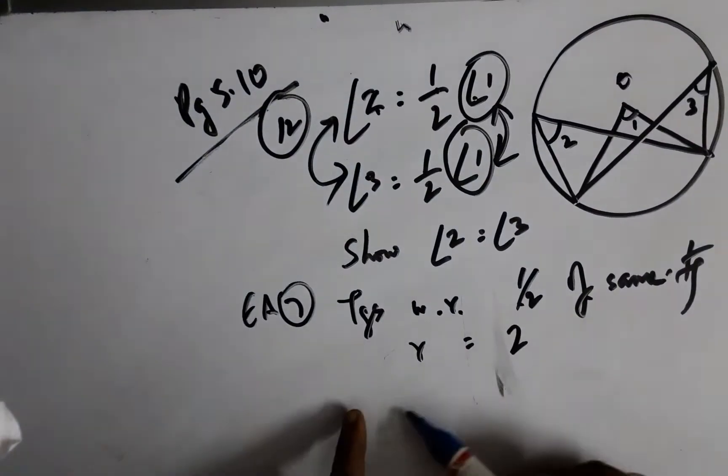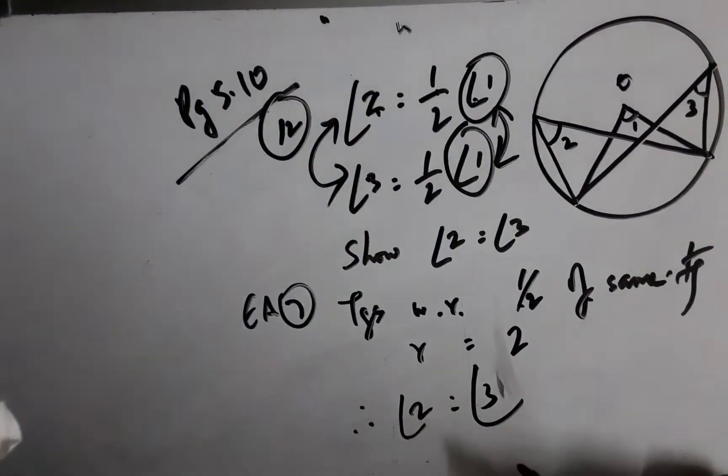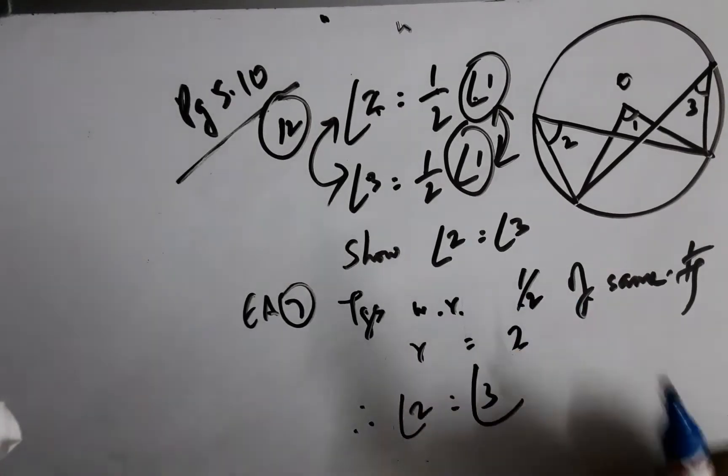Just writing out the axiom and stating that therefore angle 2 equals angle 3 will suffice and this is how you can prove this problem.